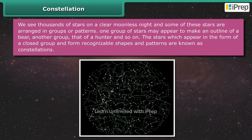Constellation: we see thousands of stars on a clear moonless night, and some of these stars are arranged in groups or patterns. One group of stars may appear to make an outline of a bear, another group that of a hunter, and so on. The stars which appear in the form of a closed group and form recognizable shapes and patterns are known as constellations.